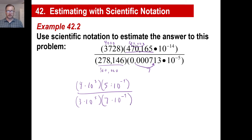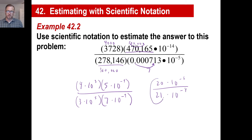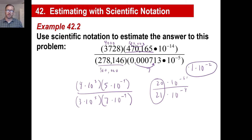Now we have 4 times 5 is 20, times 10 to the 3 plus negative 9, over 21. 10 to the 5th times 10 to the negative 9 is 10 to the negative 4th. You can pretty much treat that as 1 approximately. So 1 here times 10 to the — this goes up here and becomes a positive 4. So we have 1 times 10 to the negative 2 power. That's our estimate.